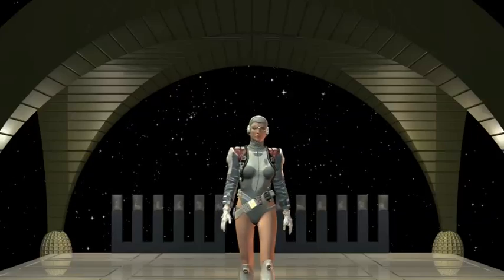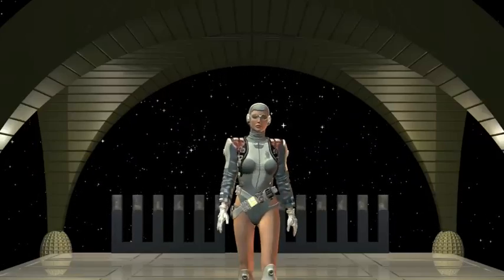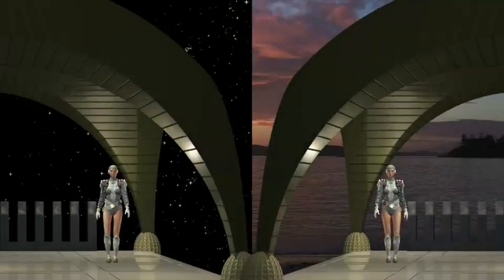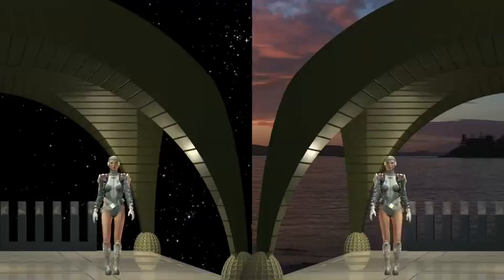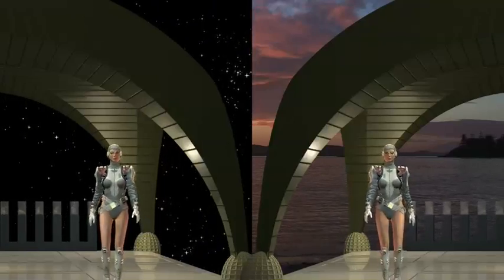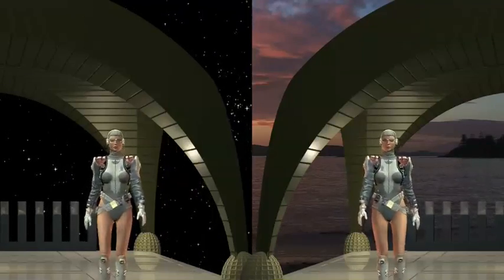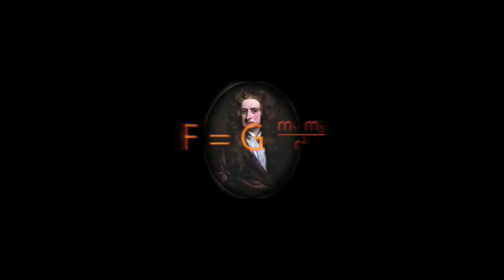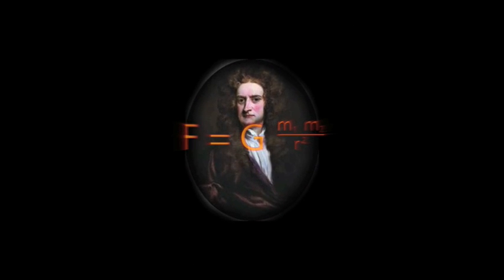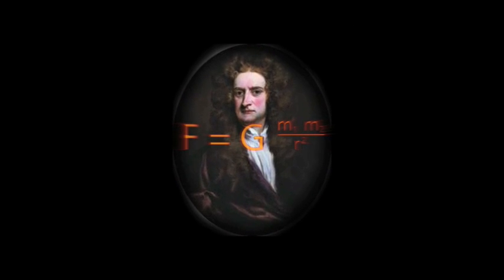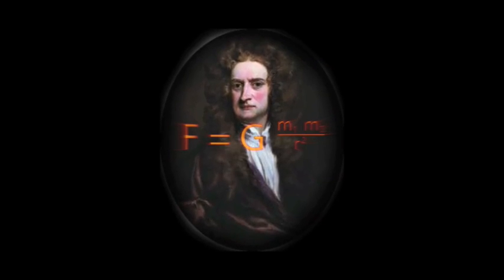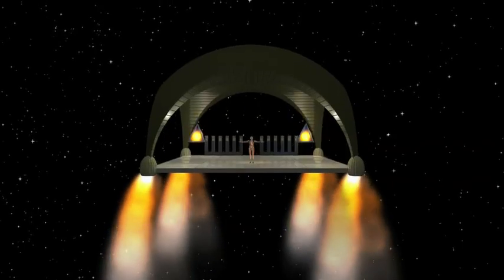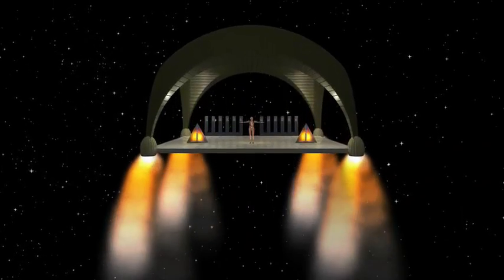In fact, Einstein argued, there's no way to tell the difference between being stationary under the influence of gravity or being accelerated through space. And since all observers must agree on the basic laws of physics, the laws of physics that describe gravity must be, in some sense, equivalent to those that describe acceleration through space.